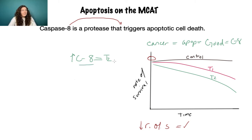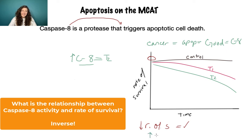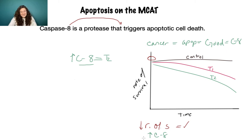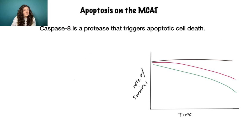What kind of relationship do we have between caspase 8 activity and rate of survival? Inverse. If we increase caspase 8 activity, we'll decrease rate of survival — that's an inverse relationship. A direct relationship would have the arrows going in the same direction, either both up or both down.